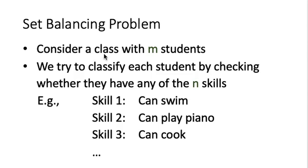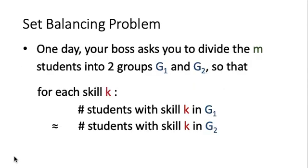Suppose that we have a class with m students, and we can classify each student by checking whether they have any of the n skills. For instance, Skill 1 is whether a student can swim or not, Skill 2 is whether a student can play piano or not, Skill 3 is whether a student can cook or not. One day, your boss, the headmaster of the school, asks you to divide the m students into two groups, G1 and G2. The purpose is that the headmaster wants the students to play in some competition, and he wants the competition to be as fair as possible, so that for each Skill K, the number of students with Skill K in the first group is roughly the same as in the second group.